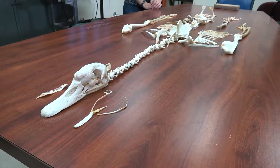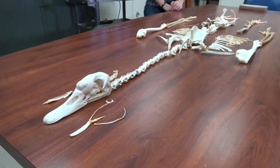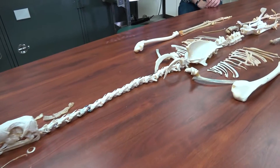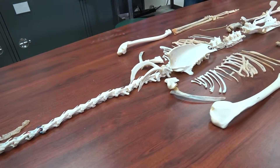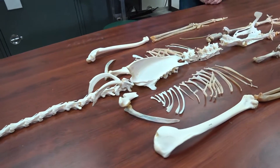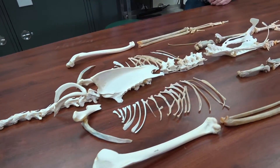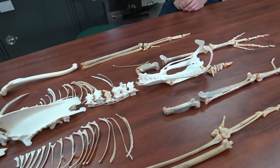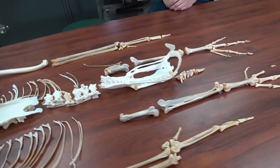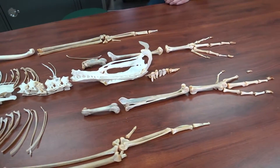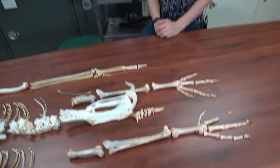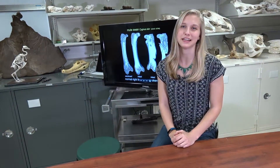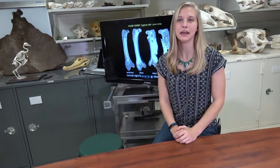What you're looking at here is a laying out skeleton of a mute swan that we got from a rehabilitation center in Florida. It's a gorgeous specimen, and actually what caught our attention were some abnormalities that it has in the hip region. I'm Emily Caggiano and this is another episode of Dissecting with Emily.